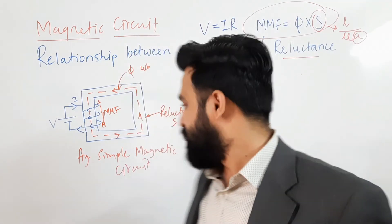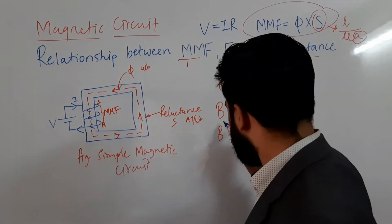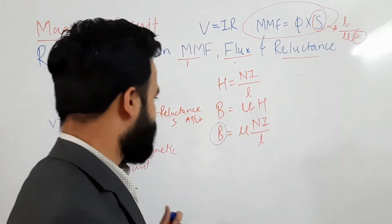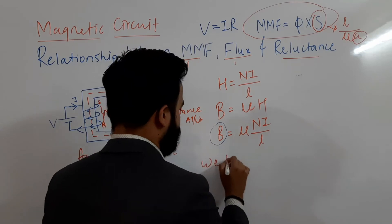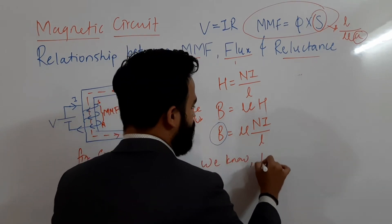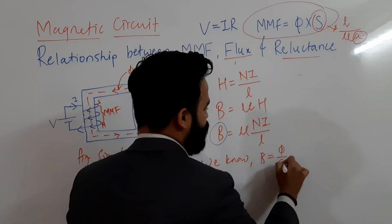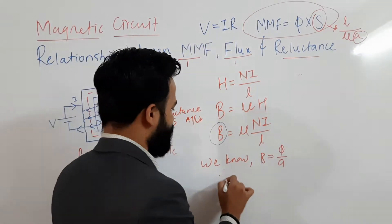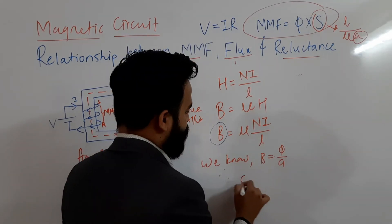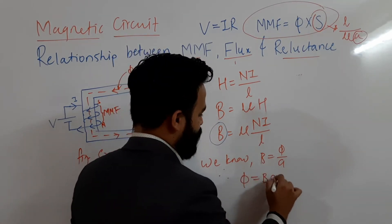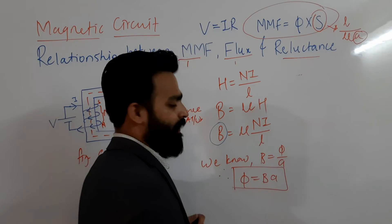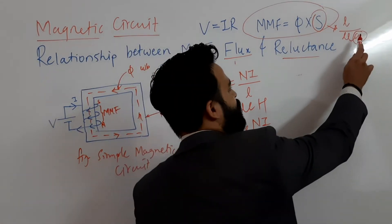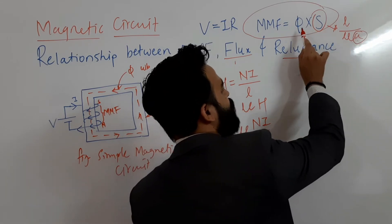B is the magnetic flux density. The relationship between flux density and flux is B = φ/A, and therefore φ = B·A. This is a very important equation. By using φ = B·A, we ensure that we get the term A and the term φ in our derivation, which is exactly what we need to derive the target equation.